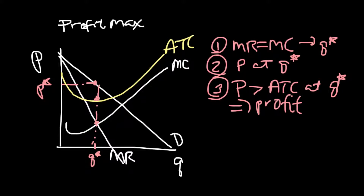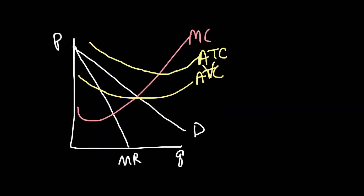That was pretty much the end of the story with a monopolist. What's going to be different here is that ease of entry is high in monopolistic competition. The fact that this profit exists will tell other firms they can enter and get some of those profits. Before getting into what will happen in the long run, let's look at loss minimization, because that is also a possibility for a monopolistic competitor. Pause the video if you want to figure out where the firm would produce, what quantity, what price, and whether it's making a profit or a loss.